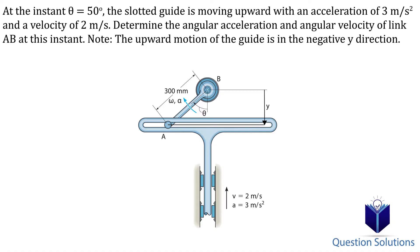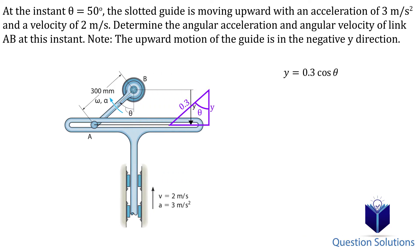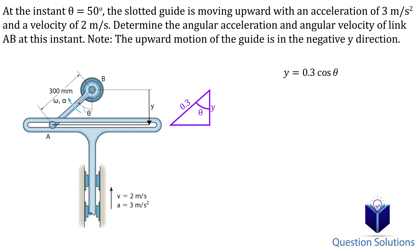So how can we express the length y with respect to the angle? We can use trigonometry. We form a right-angle triangle and one side of it is the y length, so we can write y = 0.3 cos θ — note that we converted 300 millimeters to meters. Now it's just a matter of taking derivatives with respect to time. We will take the first derivative, then the second derivative, and simplify.